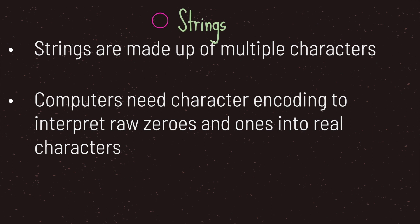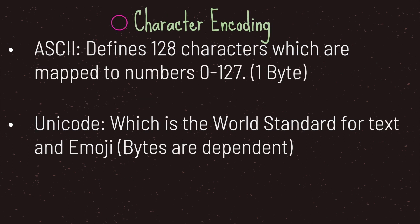Strings are made up of multiple characters. Computers need character encoding to interpret raw zeros and ones into real, readable characters. When it comes to character encoding there are two different types.